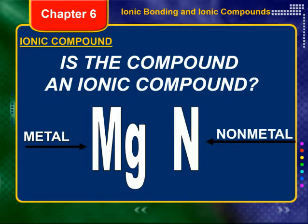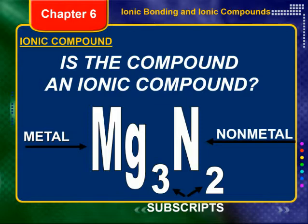We can't change what the charges are going to be. What we can do is change how many of each ion are present. So if I were to add subscripts into this formula — three magnesiums and two nitrogens — when I go to count the charges, I have three plus twos, so that's a total of plus six. And two minus threes, so that's a total of minus six.